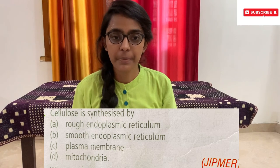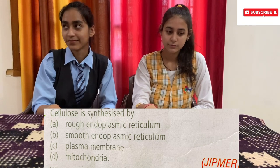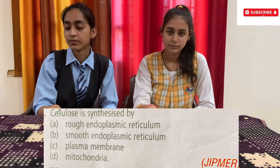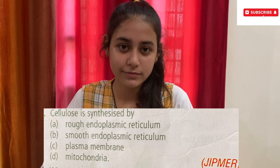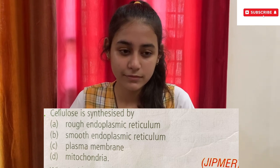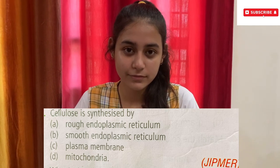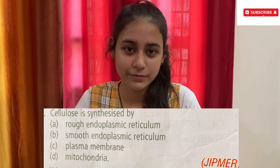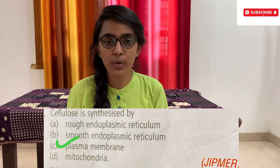The next question goes to both participants. Cellulose is synthesized by — options: A) Rough endoplasmic reticulum, B) Smooth endoplasmic reticulum, C) Plasma membrane, D) Mitochondria. Option C, Plasma membrane. Are you sure? Yes ma'am. Option C, Plasma membrane, is the correct answer. Give her a huge round of applause!